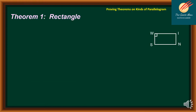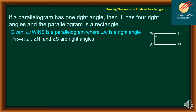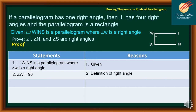Let's move on to the first theorem. The theorem on rectangle states that if a parallelogram has one right angle, then it has 4 right angles and the parallelogram is a rectangle. We will use the illustration on the right side. Quadrilateral WINS is a parallelogram where angle W is a right angle. We would like to prove that angles I, N, and S are right angles. Statement 1: Quadrilateral WINS is a parallelogram where angle W is a right angle — reason: given. Statement 2: the measure of angle W is equal to 90 degrees — reason: definition of right angle.